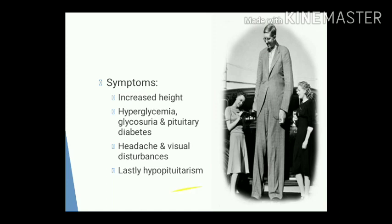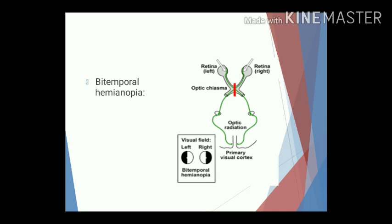The commonest visual disturbance is bitemporal hemianopia, caused by compression of the optic chiasma. As seen in the diagram, the optic chiasma is compressed by the acidophilic tumour of the pituitary gland, producing loss of the temporal field of vision in both eyes. This is known as bitemporal hemianopia.